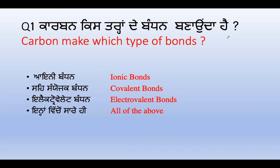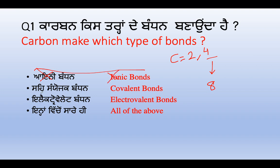First MCQ question: carbon makes which type of bond — ionic bond, covalent bond, or electrovalent bond? Carbon has atomic number 6, with 4 electrons in the outer shell. Carbon cannot give away or gain these 4 electrons easily — no one can take 4 electrons and no one can give 4 electrons — so an ionic bond is not formed. Therefore the correct answer is B: covalent bond.